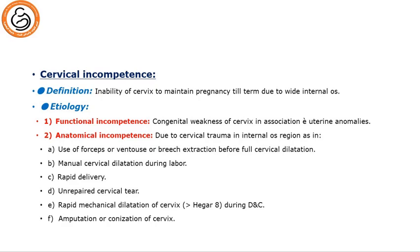Cervical incompetence, one of the causes of recurrent mid-trimester miscarriage with decreasing duration of pregnancy, is defined as inability of the cervix to maintain pregnancy to term due to a wide internal os. Etiology: either the condition is functional — congenital weakness of the cervix in association with uterine anomalies — or anatomical — actual trauma to the cervix injuring the internal os region, like using forceps, breech extraction, manual cervical dilatation during labor to augment it, rapid delivery, unrepaired cervical tear missed during vaginal delivery, rapid mechanical dilatation during D&C with more than a Hegar dilator, or amputation or conization of the cervix in management of CIN.